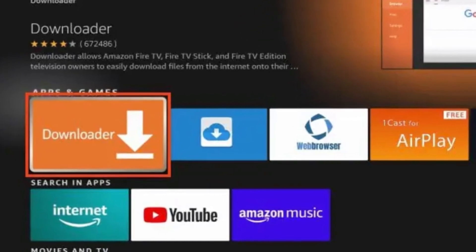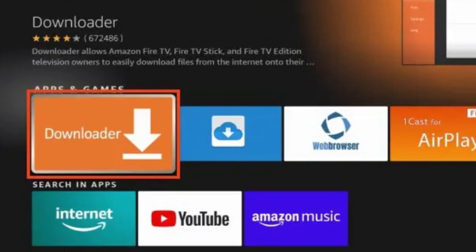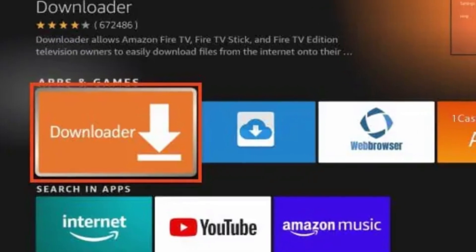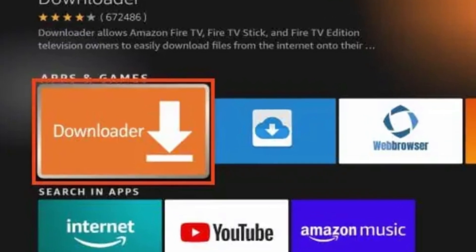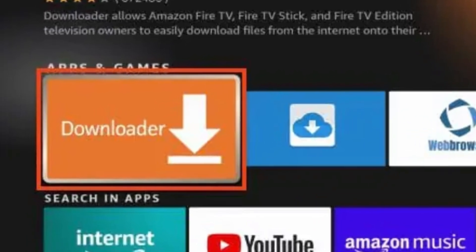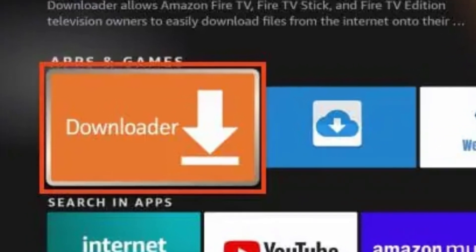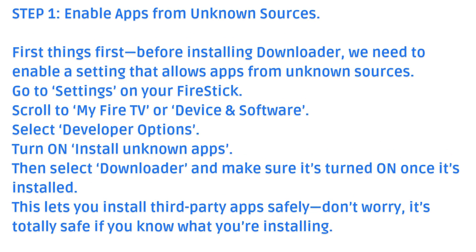Step 1: Enable apps from unknown sources. Before installing Downloader, we need to enable a setting that allows apps from unknown sources. Go to Settings on your Fire Stick, scroll to My Fire TV or Device and Software, then select Developer Options. Turn on Install Unknown Apps, then select Downloader and make sure it's turned on once it's installed. This lets you install third-party apps safely.